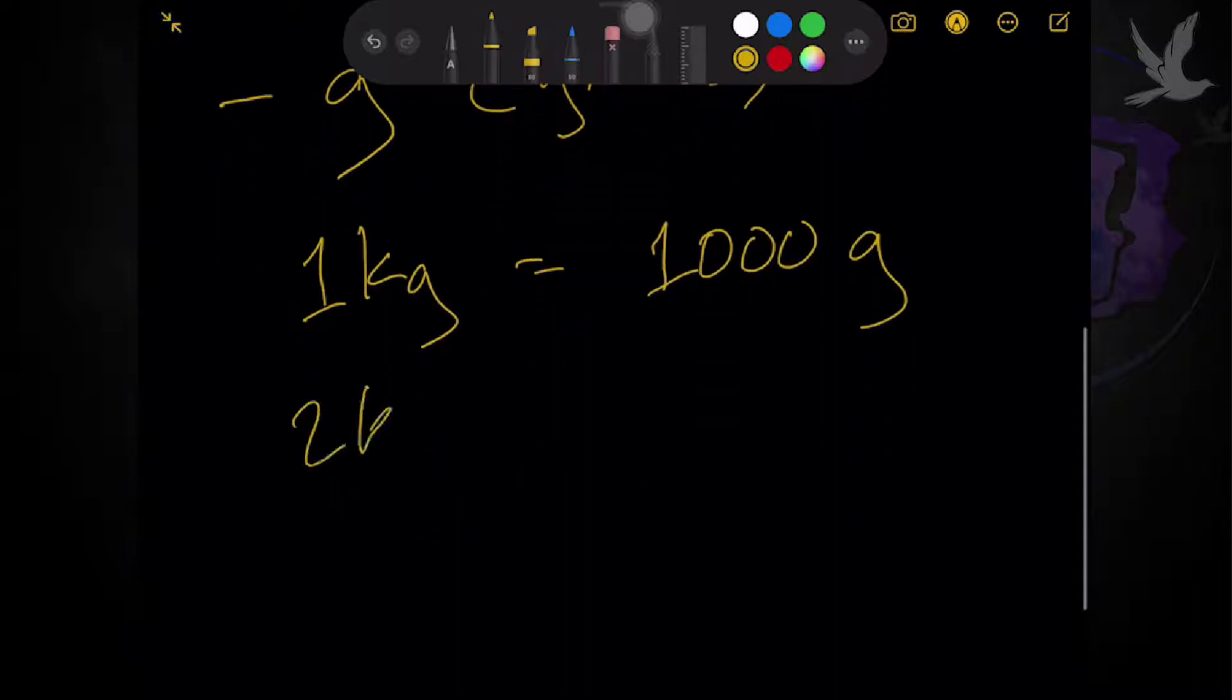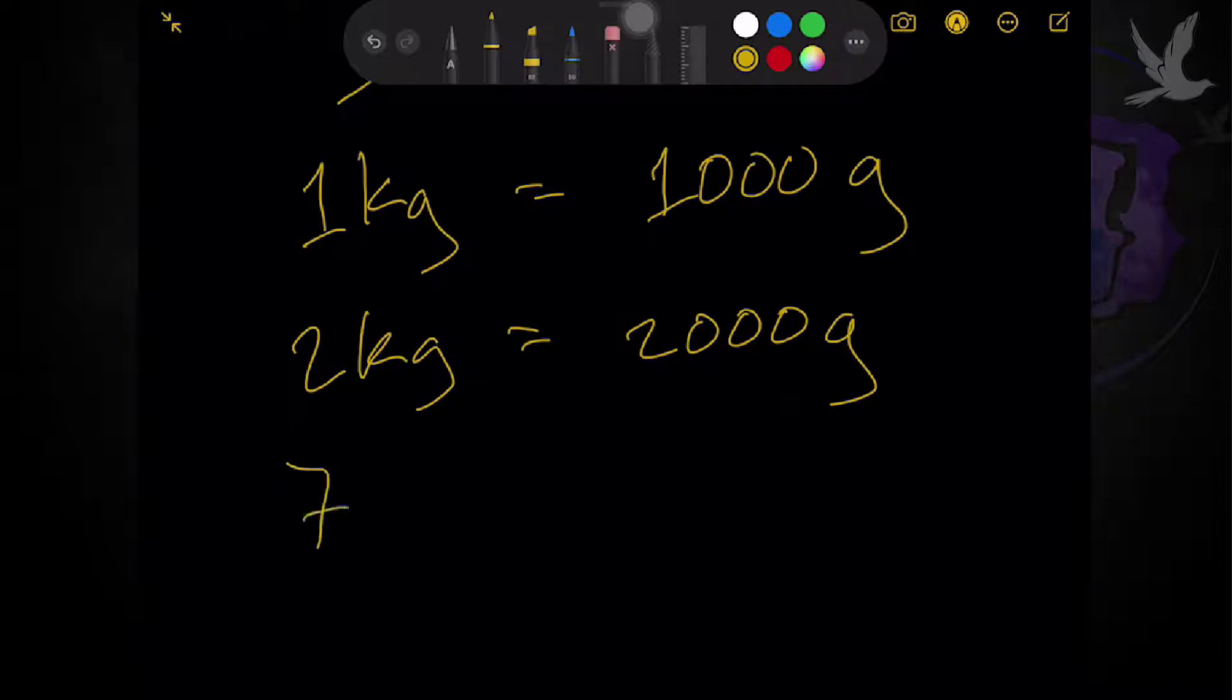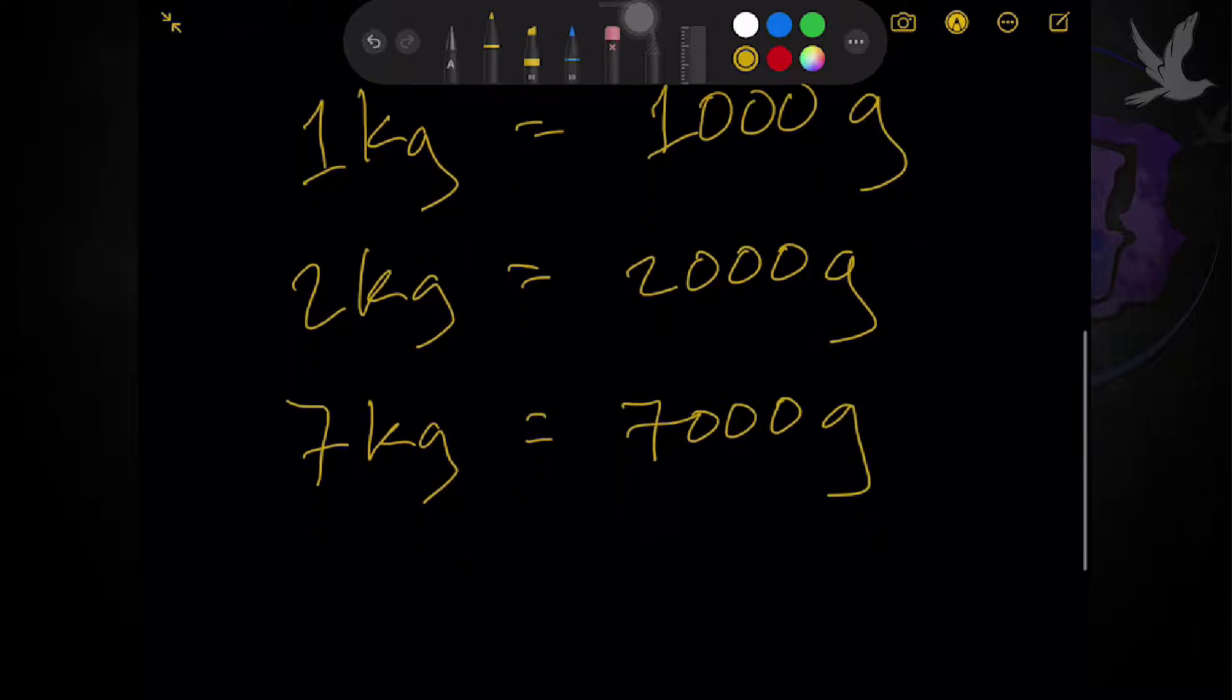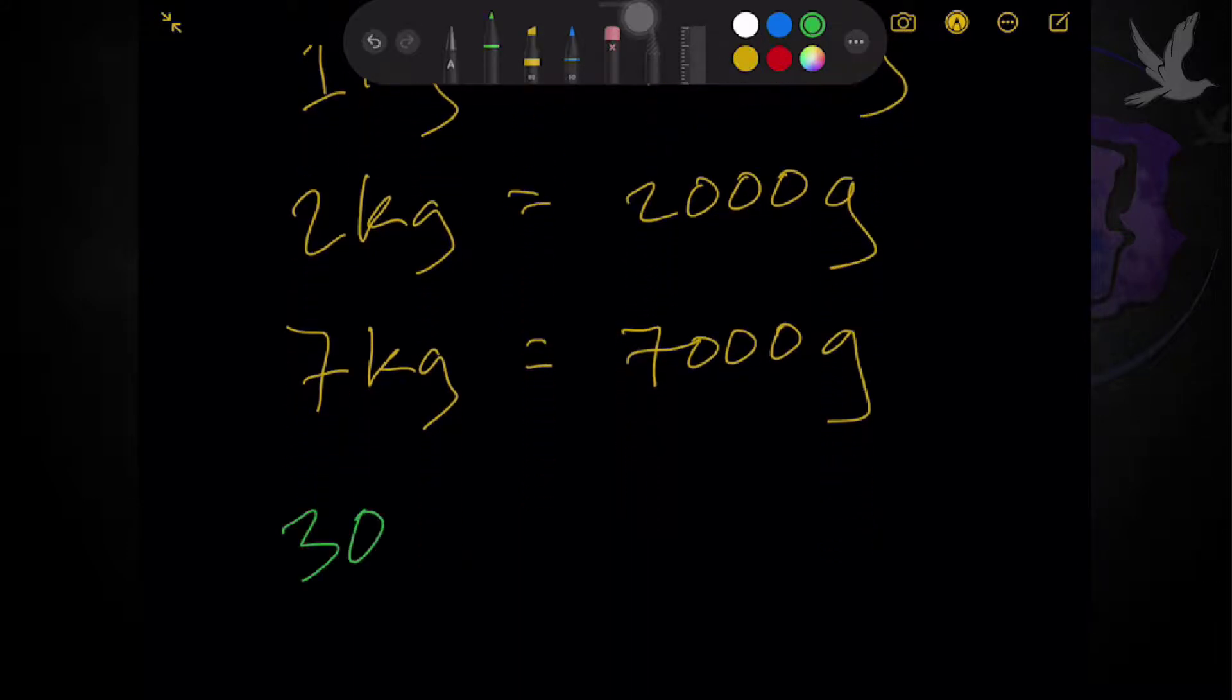Okay? So, it means that for every 2 kilograms, it's just equivalent to 2,000 grams. Kung may 7,000 kilograms, so that's equivalent to 7,000 grams. Doing the opposite, the other way around, we can also say that if there's 3,000 grams, it's equivalent to 3 kilograms.